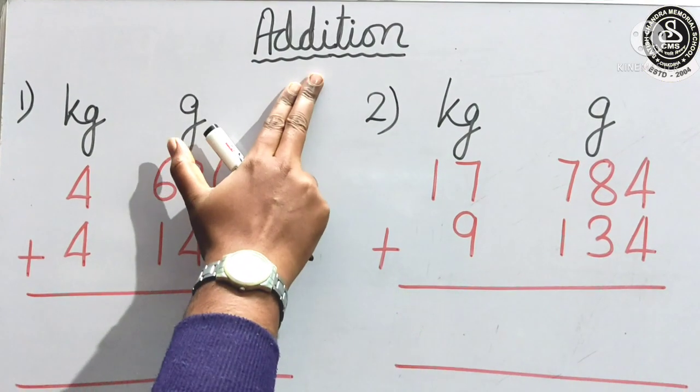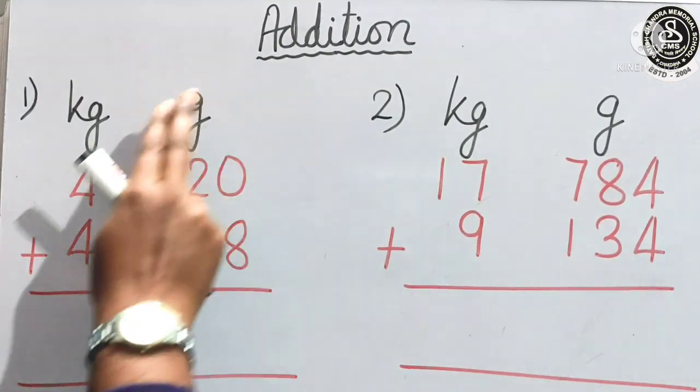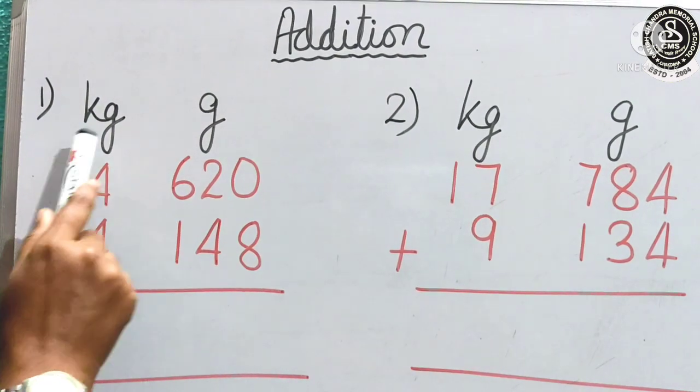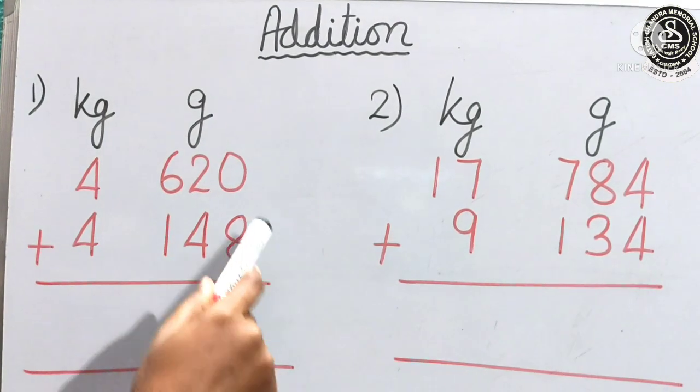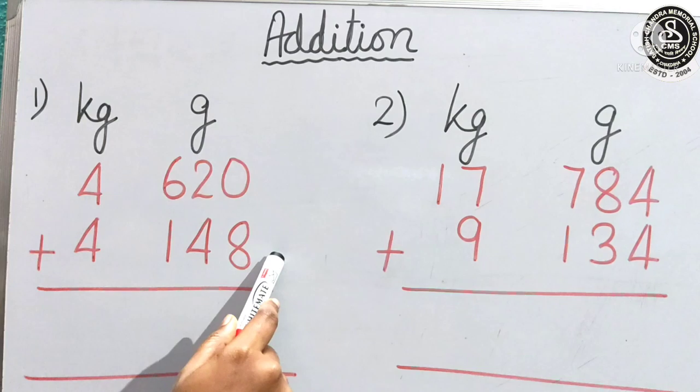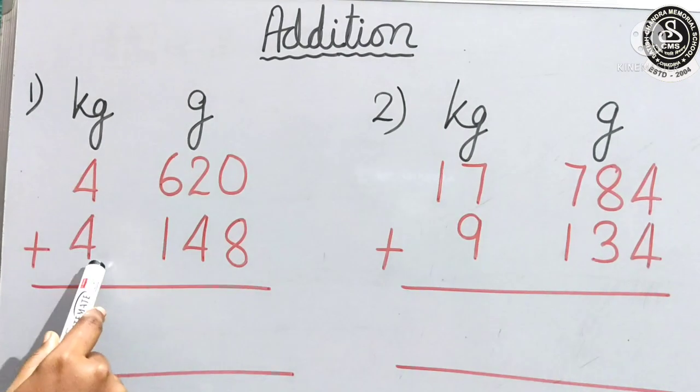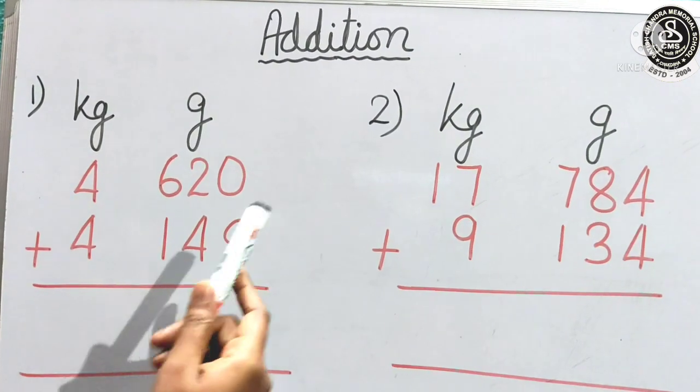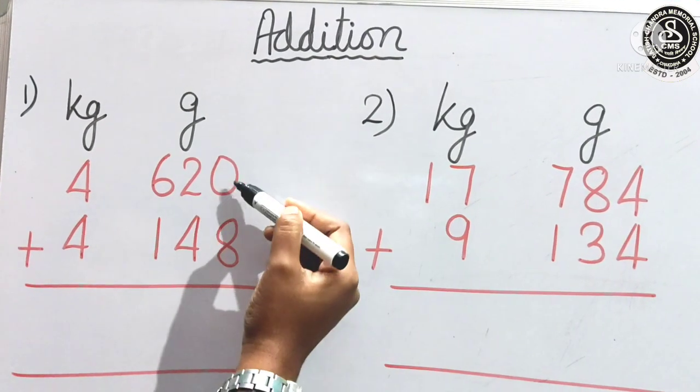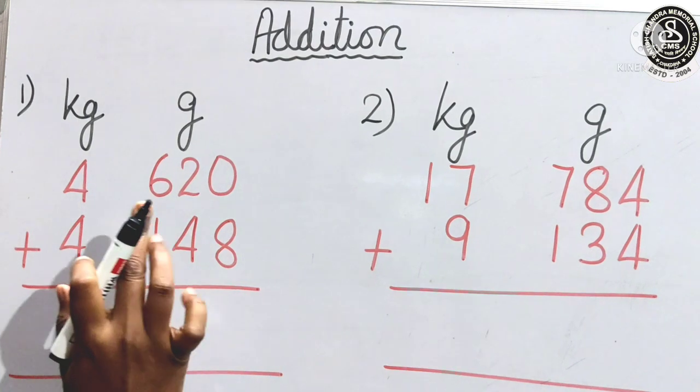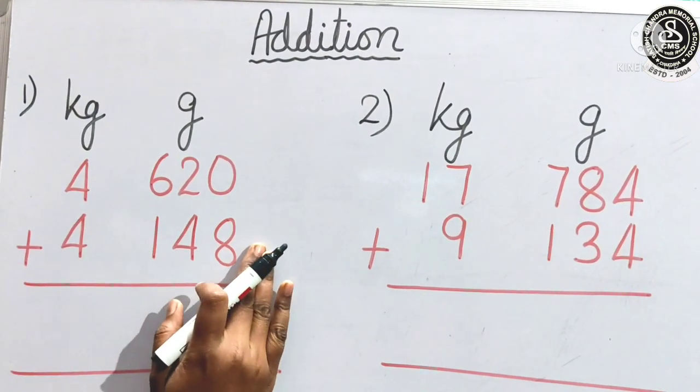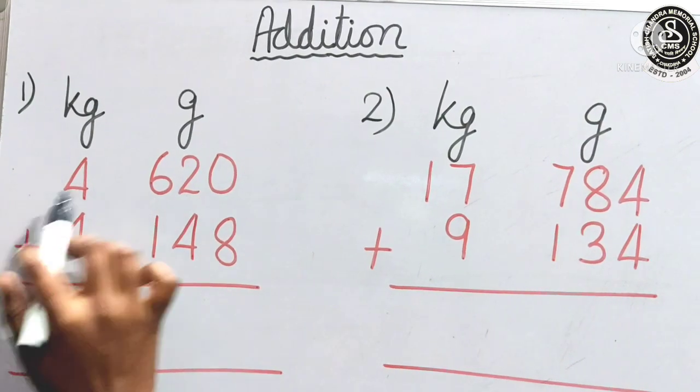So, children today again we are going to do addition of kilogram and gram. So, you have seen that I have already arranged a number in gram and kilogram. Always we will add gram with gram and kilogram with kilogram. So, let us do the addition. From where we will start? From this one's place. And always keep it remember that always we will start from this side and we will go to this side.